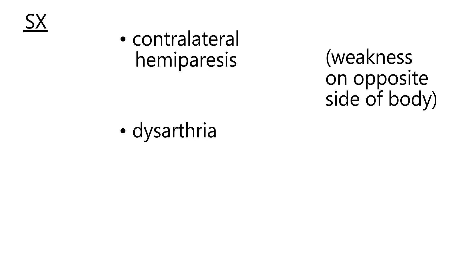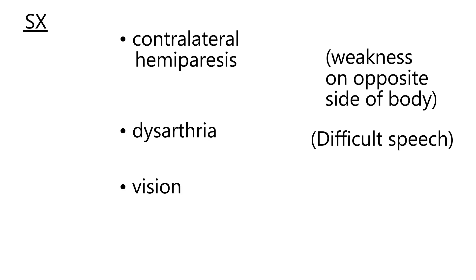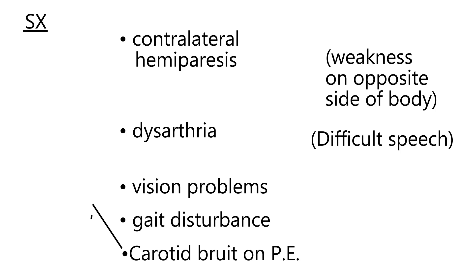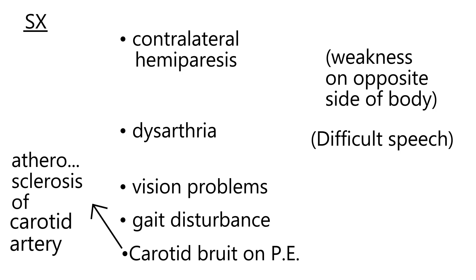The next symptom is dysarthria, which is difficulty in speech — slurred speech. Vision problems are also very commonly reported in TIAs. Gait disturbance is another symptom. Also notable on physical exam is a carotid bruit that you can auscultate. You hear this bruit because of the atherosclerosis of the carotid artery, and it is a quick and inexpensive finding to assess before ordering expensive tests.